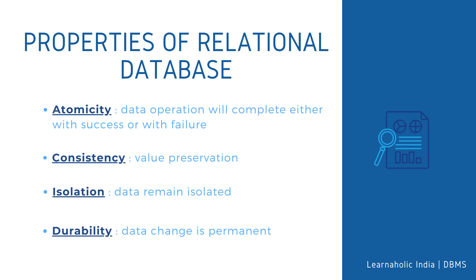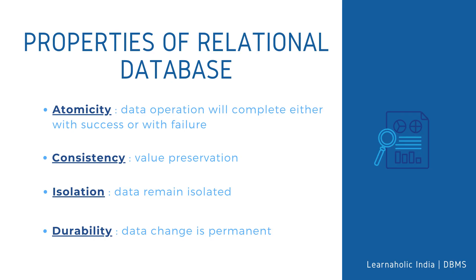I means Isolation — there can be concurrent users accessing data at the same time from the database, so isolation between the data should be maintained. For example, when multiple transactions occur at the same time, one transaction's effects should not be visible to the other transactions in the database. D means Durability — it ensures that once the operation is completed and data is committed, the data changes should remain permanent.